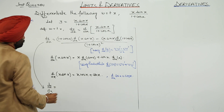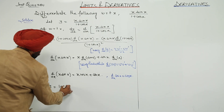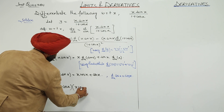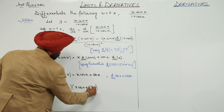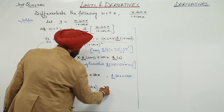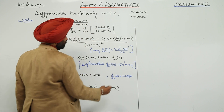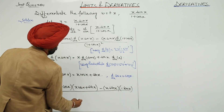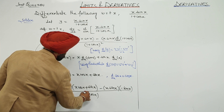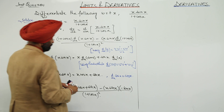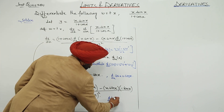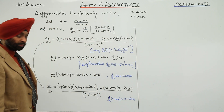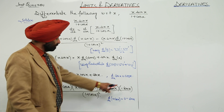dy/dx is equal to: we are having 1 plus cos(x), and d/dx of x·sin(x) — that is x·cos(x) plus sin(x) — negative of x·sin(x) with d/dx of cos(x), that is negative of sin(x), upon 1 plus cos(x) whole square. So d/dx of 1 plus cos(x) equals 0 minus sin(x), that's why we have put negative of sin(x).